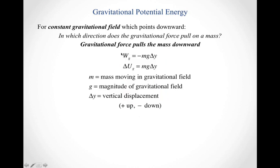So how do we calculate this? We had an equation for the work done by the gravitational force: negative mass times the gravitational acceleration times delta y, where delta y is the vertical displacement — positive when an object moves up and negative when an object moves down. If the change in the gravitational potential energy is negative the work done by gravity, then those two minus signs cancel out, and I'm left with the change in the gravitational potential energy equal to positive mass times g times delta y, which is either plus or minus depending on whether your object moved up or down. Let's check that this is consistent with the signs we need.